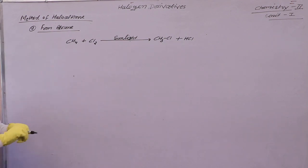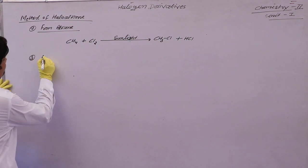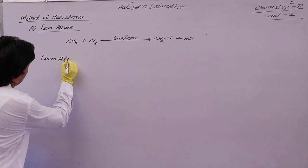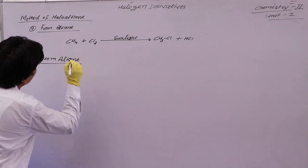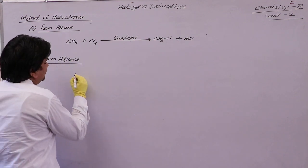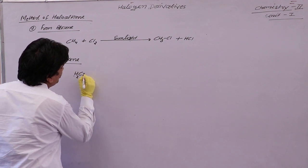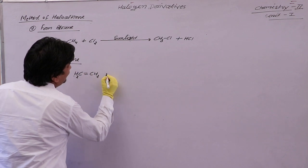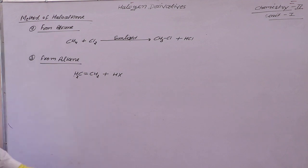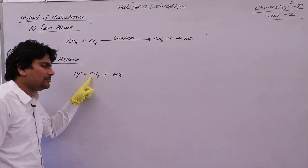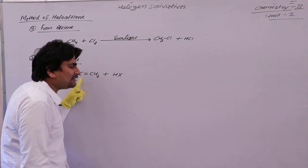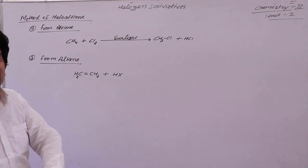Next, the third method is from alkene. When an alkene — for example CH₂=CH₂ — reacts with a halogen acid, we know that on this double bond, the two carbon atoms each have an equal number of hydrogen atoms on both sides.